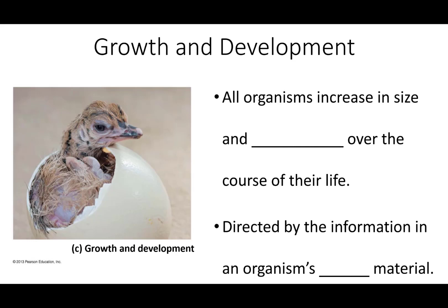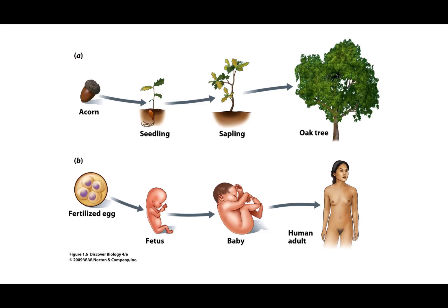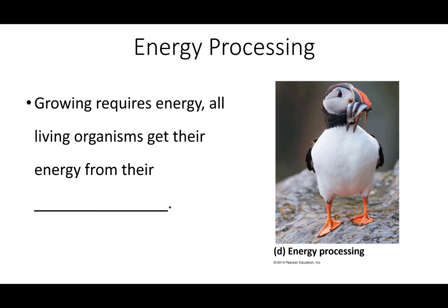All living organisms increase in size and complexity over the course of their life. All of us are larger now than we were when we were born. This growth and development is directed by the information in an organism's genetic material. In the same way an acorn grows into a seedling, then a sapling, then a mature oak tree, we all started as a fertilized egg that divided to become an embryo, a fetus, a baby, then a juvenile, an adolescent, and then an adult. Growing requires energy.